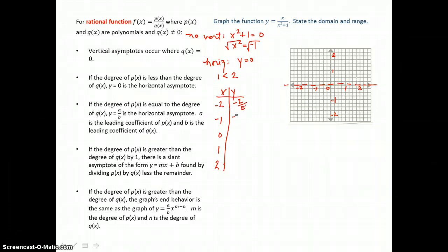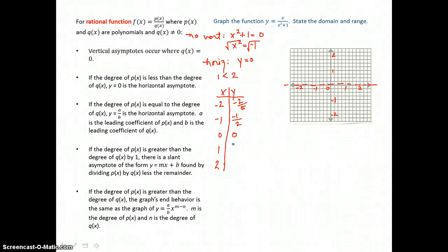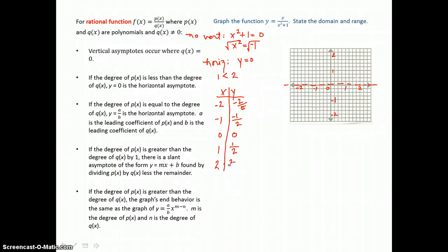When I put negative 1 in for x, I have negative 1 in the numerator. In the denominator, negative 1 squared is 1, and 1 plus 1 is 2, so I get negative 1 half for a y value. When I put 0 in for x, 0 in the numerator divided by whatever in the denominator is going to give me 0 for a y value. Now I'll put 1 in for x, so I have 1 in the numerator. 1 squared in the denominator is 1, and 1 plus 1 is 2, so I'm getting 1 half. And 2 in for x gives me 2 in the numerator. 2 squared in the denominator is 4, and 4 plus 1 is 5, so I'll get 2 fifths for a y value.